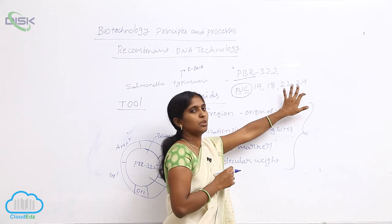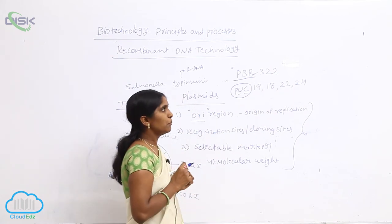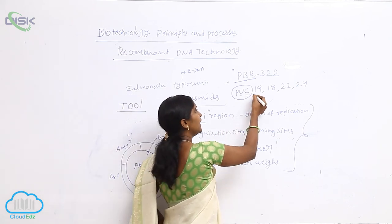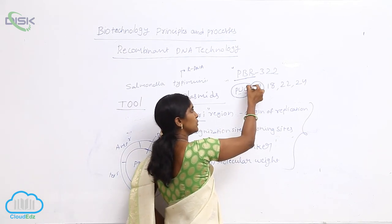PUC19, 18, 22, 24, and others. But in prokaryotes, when gene transfer is done, the ideal plasmid is PUC19.